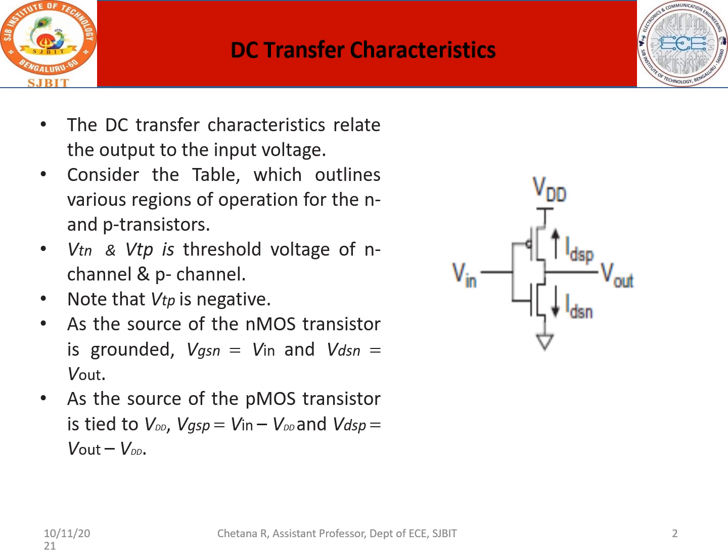VTN is positive and VTP is negative. Since the source of the NMOS transistor is grounded, VGSN is equal to the input — it is completely dependent only on the input because the source is grounded. Therefore, VGSN equals the input voltage you are applying. Similarly, VDSN equals Vout, since from the drain we are taking the output with respect to NMOS.